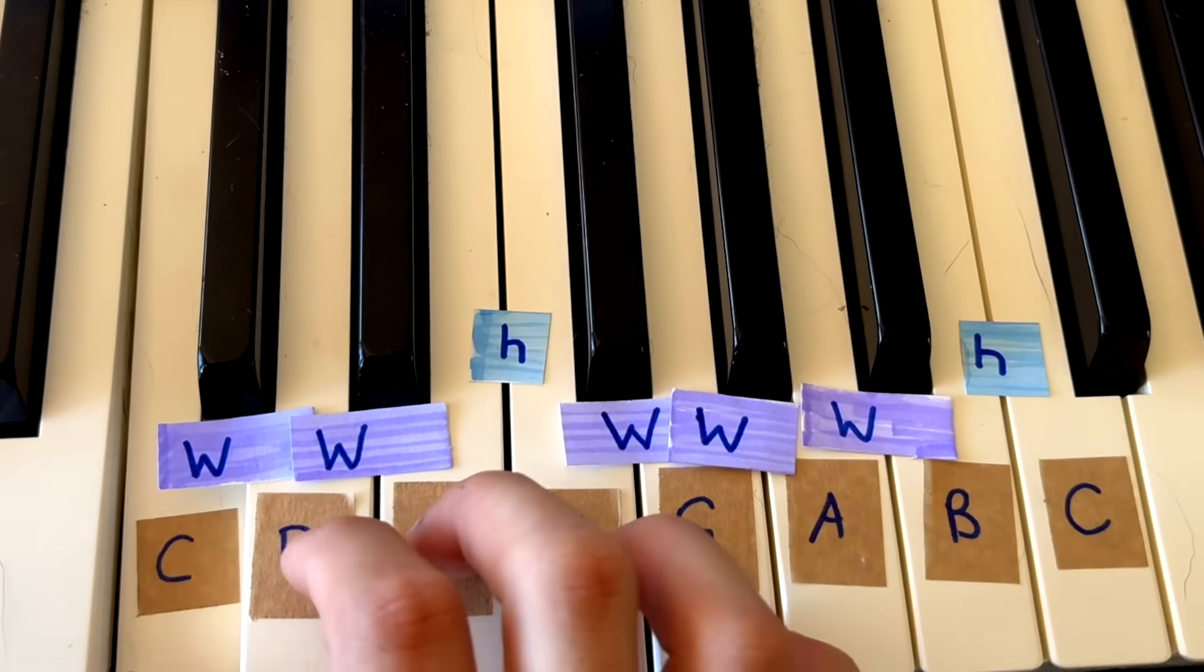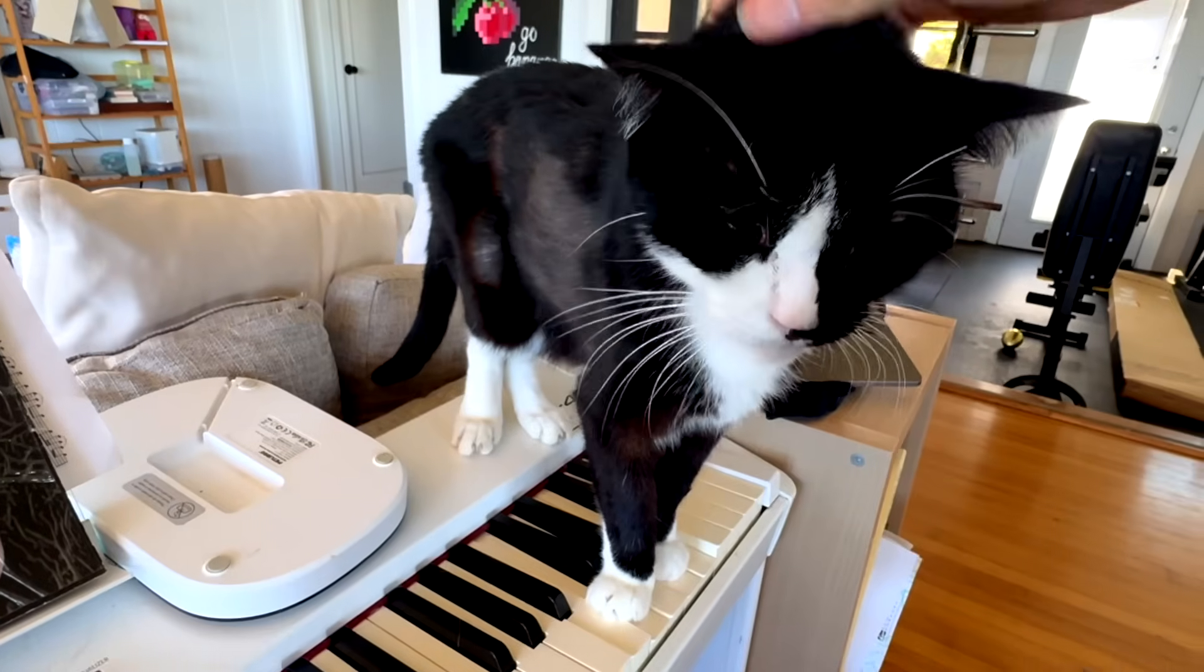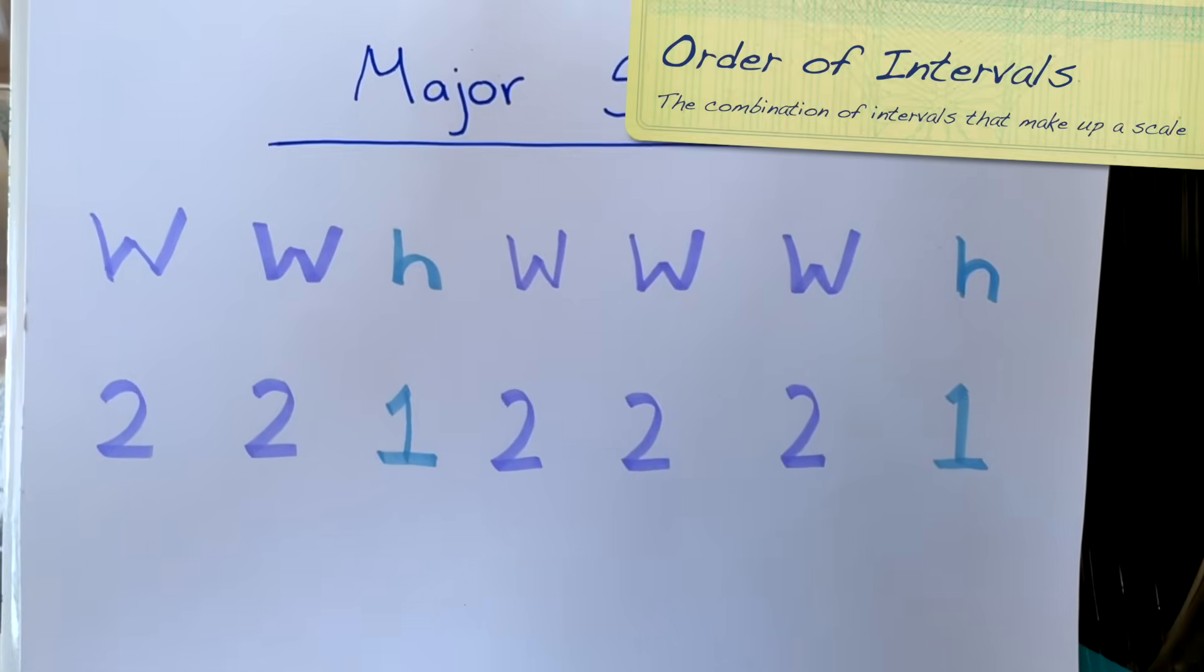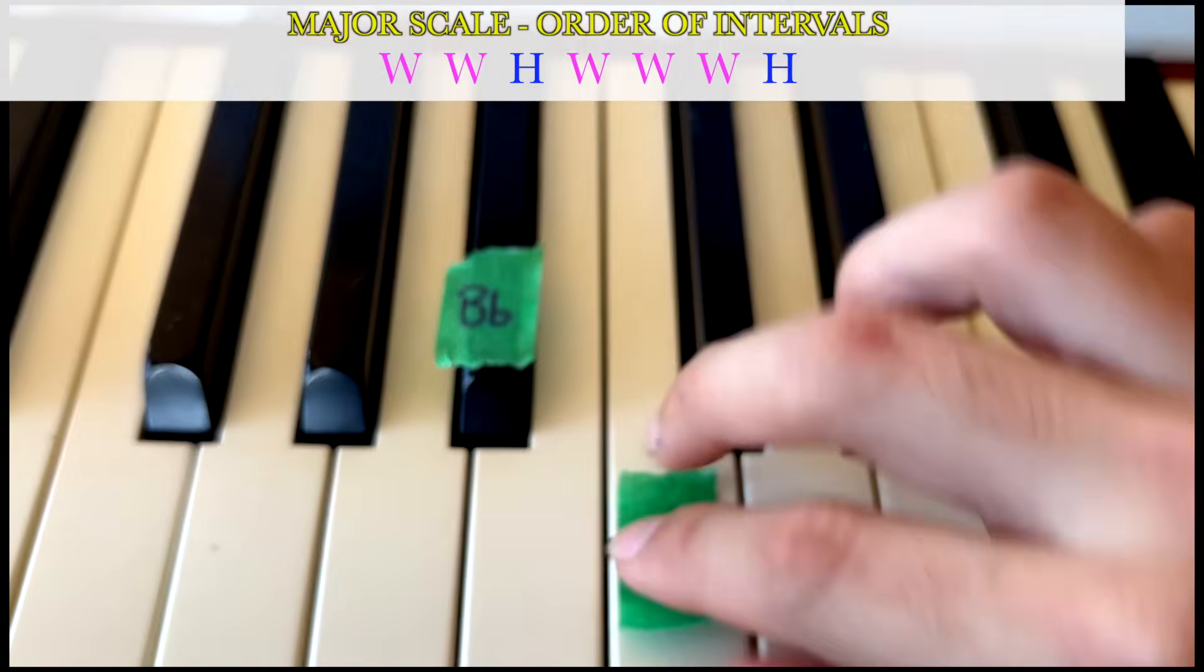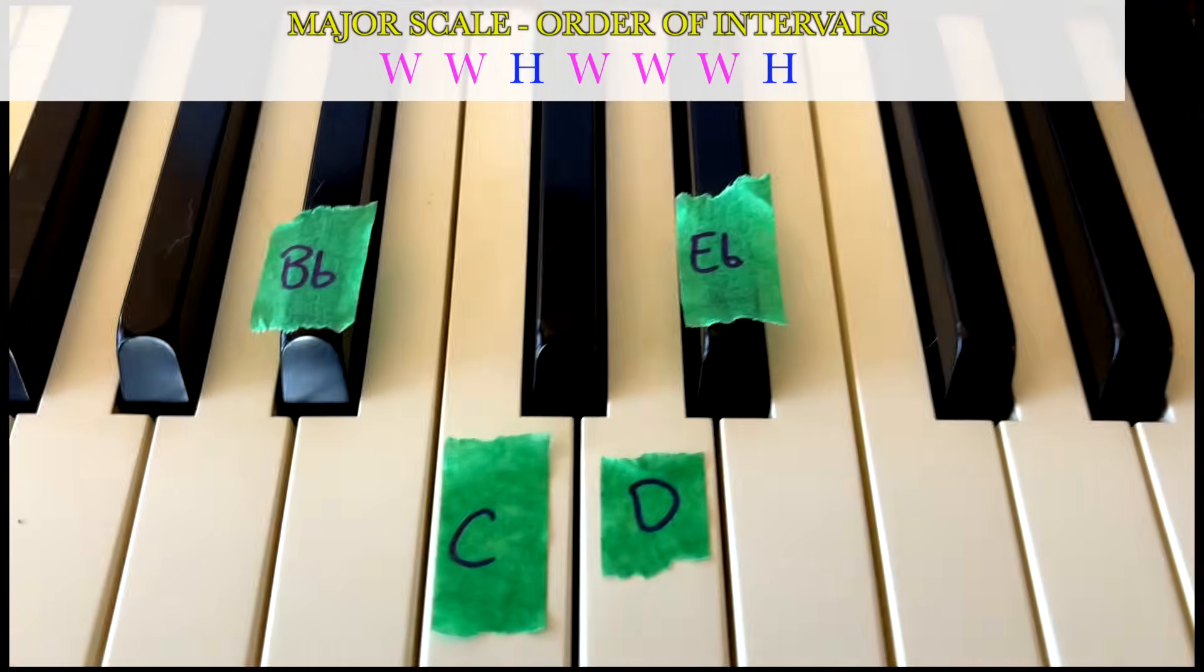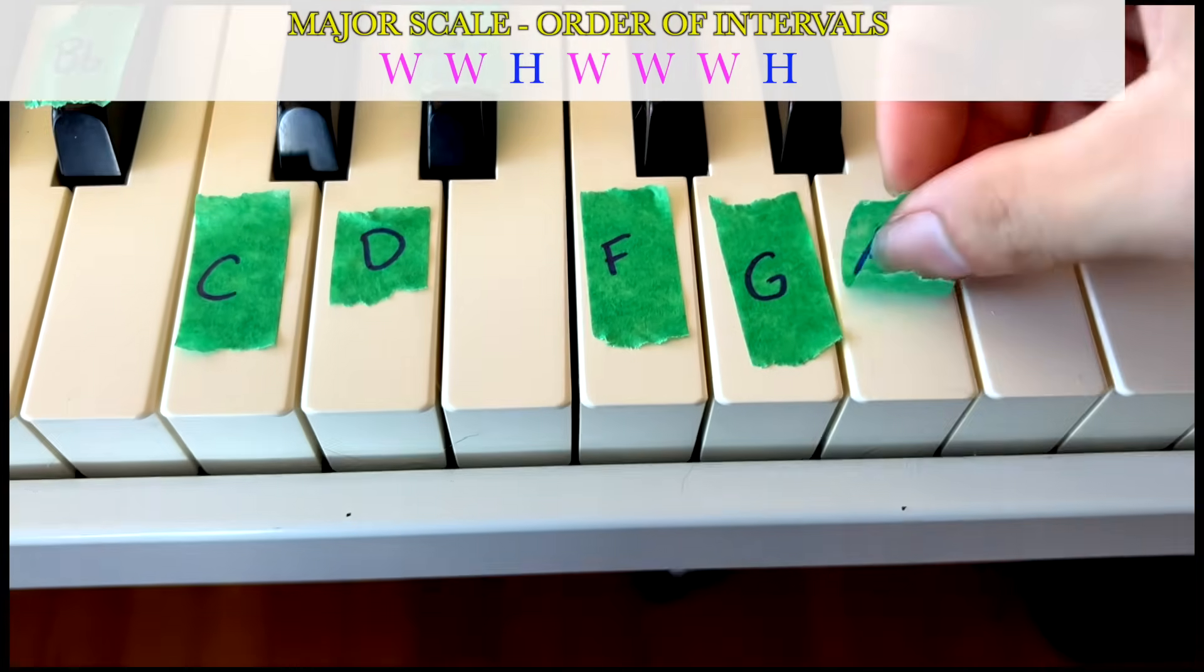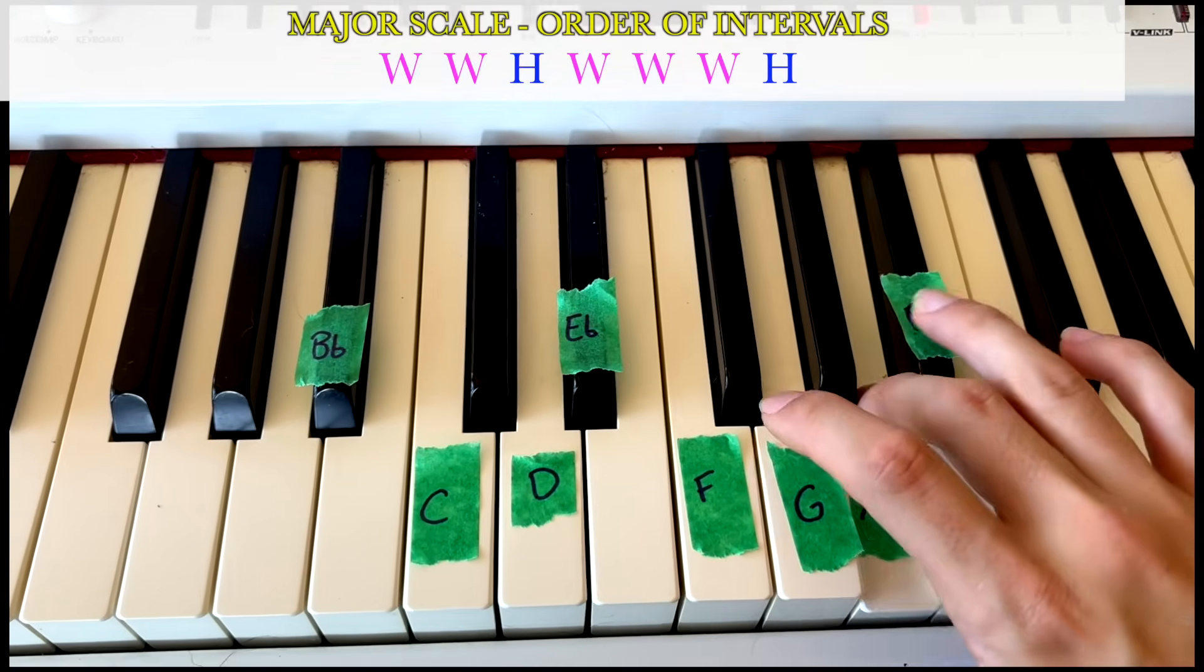But let's say that I wanted to play it in the key of B flat. Well, I've got to first find the note B flat, which is right over here, and then all I got to do is apply this exact same order of intervals: whole, whole, half, whole, whole, whole, half. So we start on B flat because it's the B flat major scale, then we go whole step which is our C, then another whole step or two notes away which is D, then a half step just to the next note which is E flat, then a whole step which is F, another whole step which is G, another whole step A, and one last half step. And we have our B flat major scale.